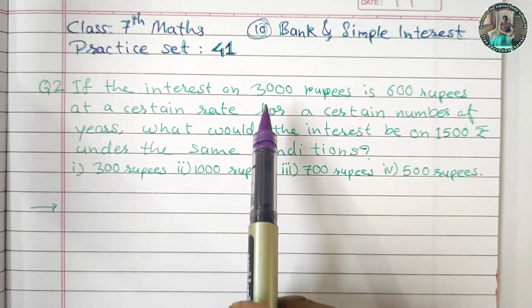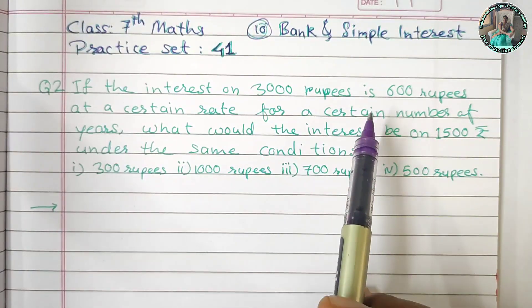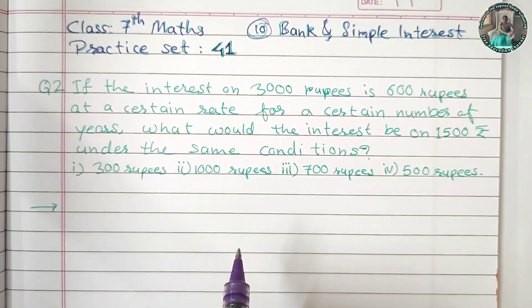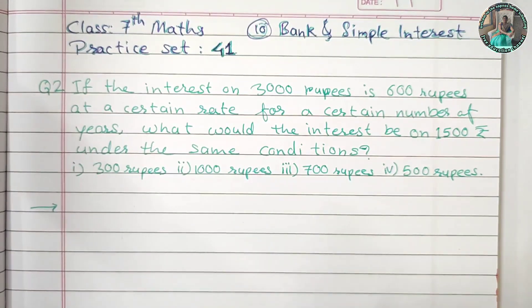The question is a little different. One amount is Rs. 3,000 and the other amount is Rs. 1,500. If the formula is I = P × R × T / 100, we can't use this formula because R is missing and T is missing.